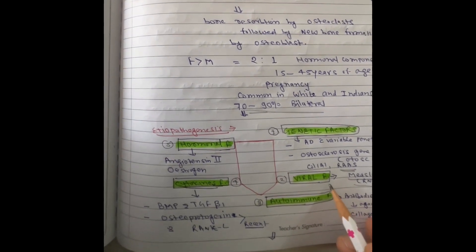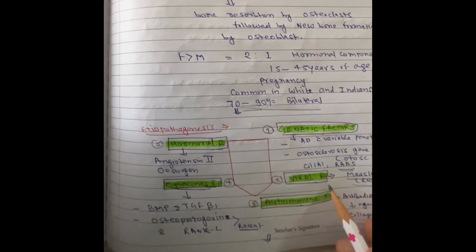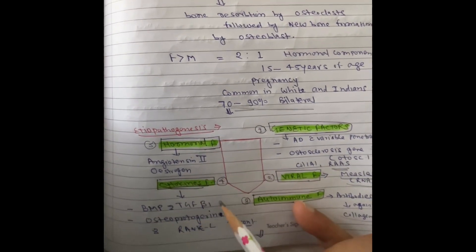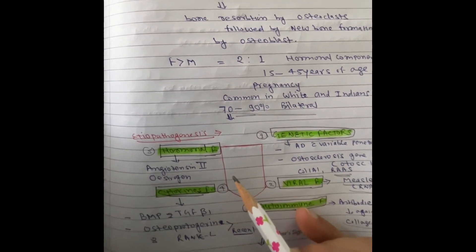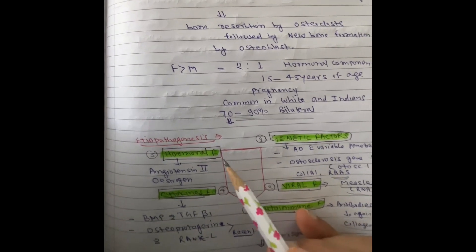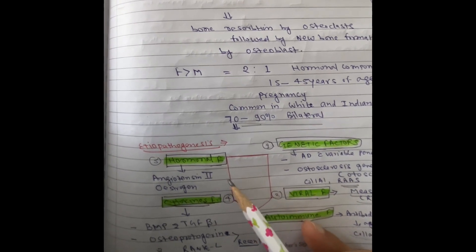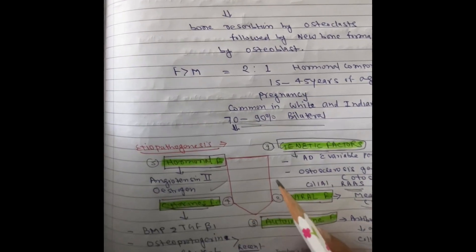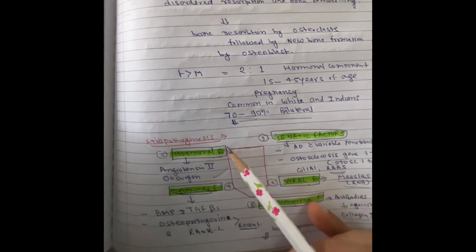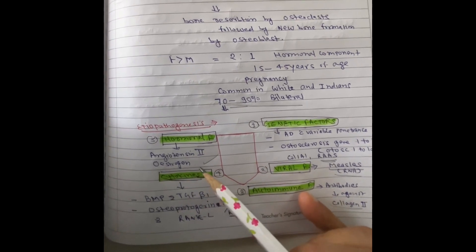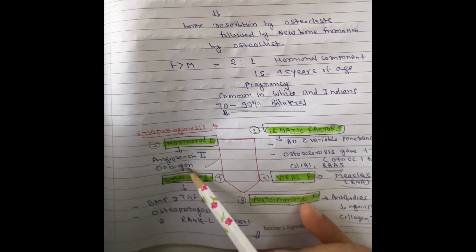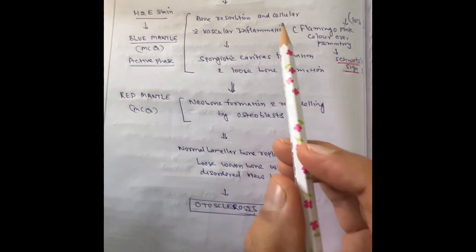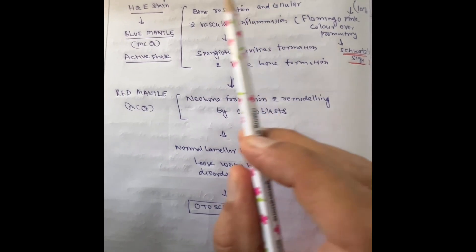Regarding the hormonal factor, angiotensin type 2 and estrogen hormone have been identified. For cytokines, bone morphogenic protein, tumor growth factor beta-1, and osteoprotegerin are implicated, leading to activation of osteoclastic activity in otosclerosis. The genes osteoprotegerin and RANKL activate osteoclastic activity in otosclerotic patients, leading to loose bone formation.